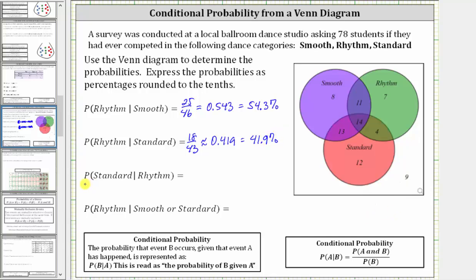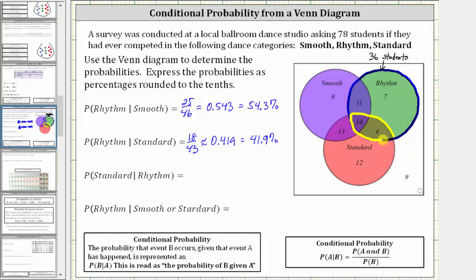Next, we're asked to find the probability a student competed in standard given they competed in rhythm. So we're only concerned about the students that competed in rhythm, which are in this set here. 11 plus 7 plus 14 plus 4 is equal to 36, so 36 students competed in rhythm. We need to find the subset of this set where the students also competed in standard, which are the students in this subset here. These students competed in rhythm and also competed in standard, and 14 plus 4 is 18.